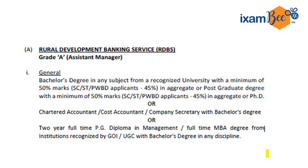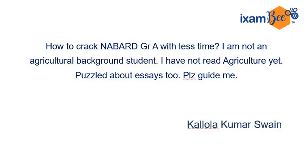Either you have 50% marks in graduation — 45% for reserve categories SC, ST, PWD — or you have a CA/CS (company secretary) with a bachelor's degree, in which case the percentage requirement is waived. Or if you have a 2-year full-time PG diploma or MBA degree, the percentage is also waived. Many people have asked whether a graduate in physics or science is eligible — yes, you are eligible, because graduation in any discipline with 50% marks qualifies.